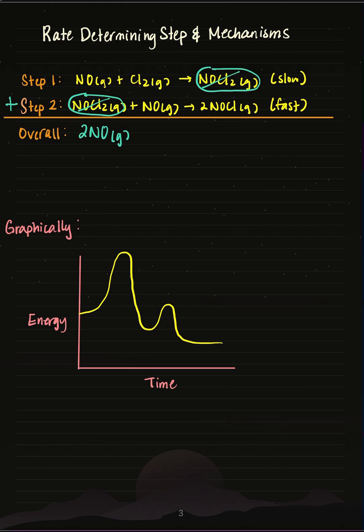Which means my overall reaction is 2NO plus Cl2 produces 2NOCl. Now, notice also that step 1 is labeled as slow, so that's another way of calling this my rate-determining step.